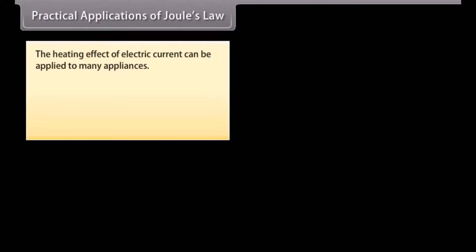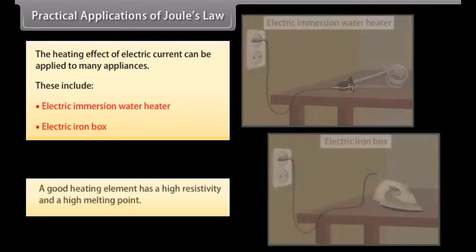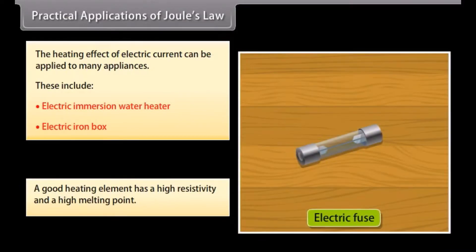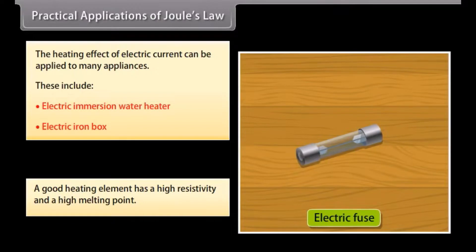The heating effect of electric current can be applied to many appliances, including electric immersion water heaters and electric iron boxes. A good heating element has a high resistivity and a high melting point. For example, an electric fuse demonstrates the heating effect of electric current — a rating of 3A means the maximum current it can sustain is 3A.